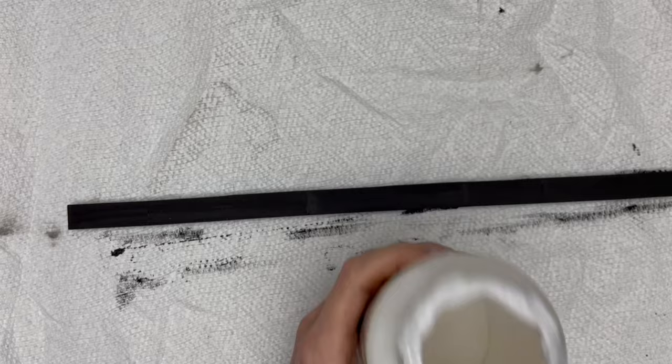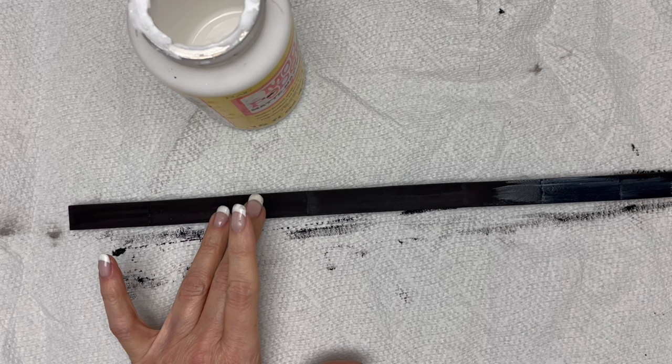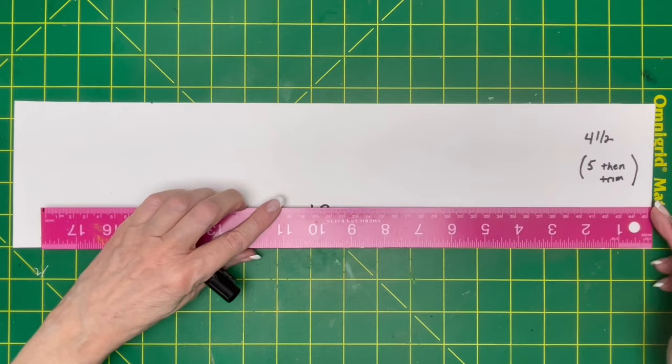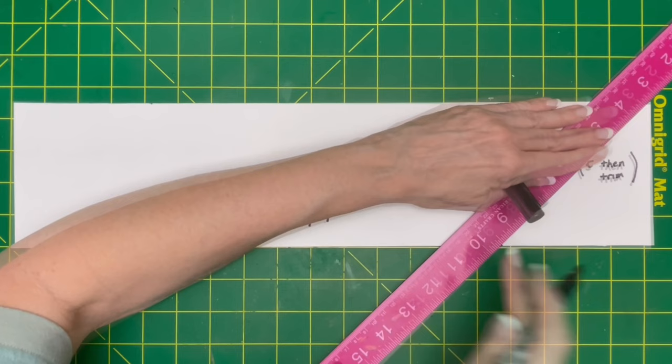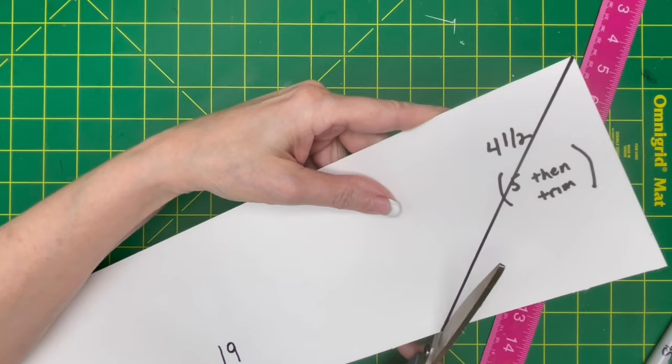Use matte Mod Podge to seal all of your painted pieces. Cut a piece of poster board 19 inches wide by four and a half inches tall. Four and a half is a very close measurement. If you want to give yourself a little bit of room for mistakes, make it five inches, and then you can cut it down later. You want to draw 45 degree angles on each end, parallel, and then trim both ends. And this will be the template for your project.